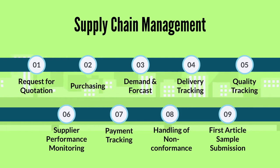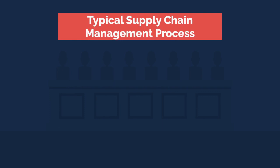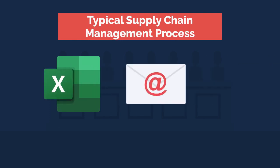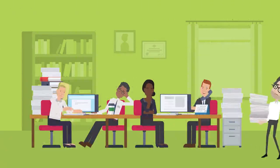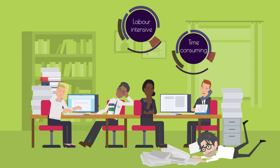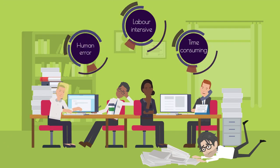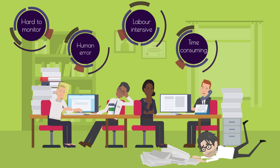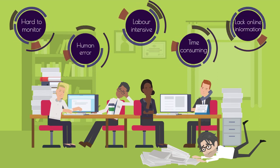Traditionally, the entire process is carried out manually. Typically, supply chain management activity is carried out through Excel spreadsheets, emailing, phone calls, etc. Traditional supply chain management is labor-intensive, time-consuming, and prone to human error. Furthermore, it is very difficult for management to monitor performance due to a lack of real-time or online information.